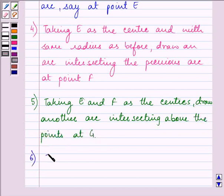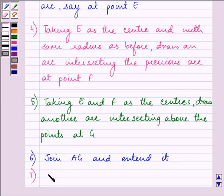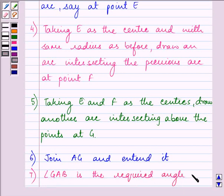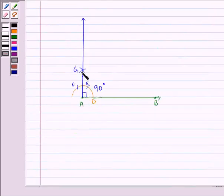Then join AG and extend it. Lastly, angle GAB is the required angle of 90 degrees. This is angle GAB.